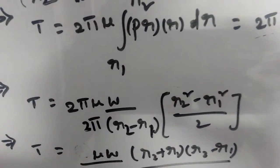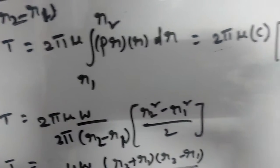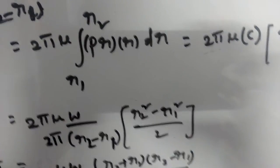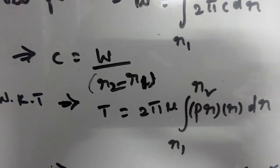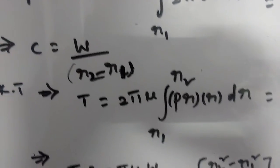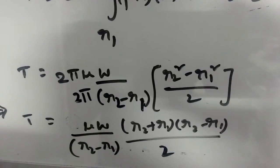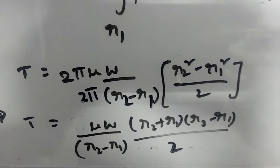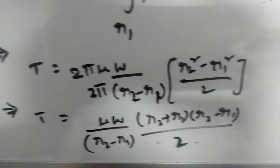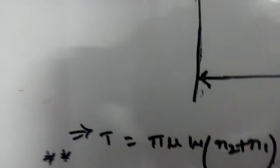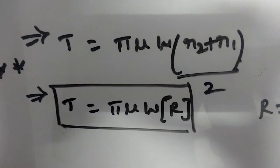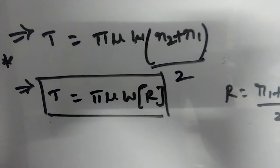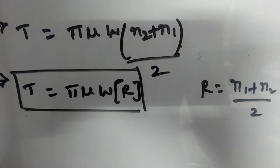Finally, substituting c = W / (2π·(r2 − r1)) into the torque equation gives T = (μ·W / (r2 − r1)) × (r2 + r1)·(r2 − r1)/2, which simplifies to T = π·μ·W·(r2 + r1)/2, or equivalently T = μ·W·r, where r = (r1 + r2)/2, the mean radius.